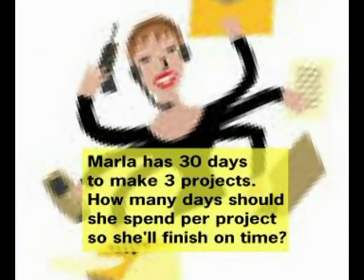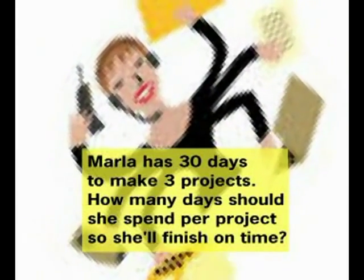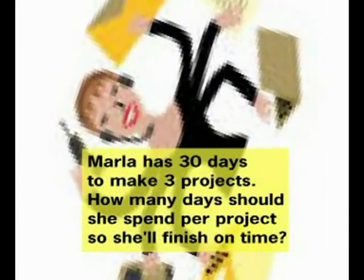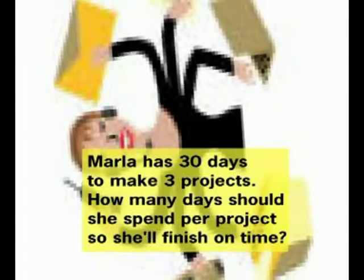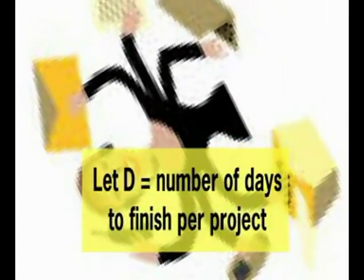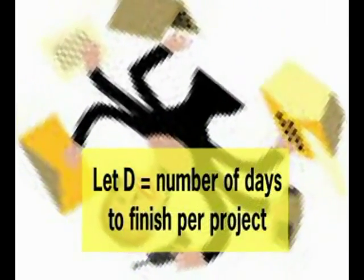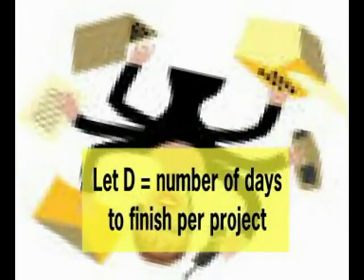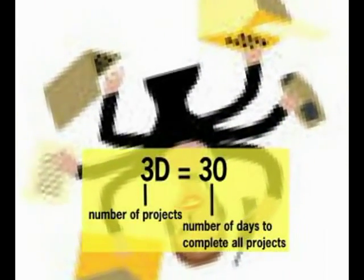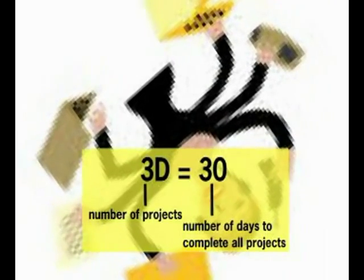Try this with us. Marla has 30 days to make 3 projects. How many days should she spend per project so she'll finish on time? Let D equal the number of days to finish one project. 3D is equal to 30. We divide both sides by 3. D is equal to 10. Marla should spend 10 days for each project.